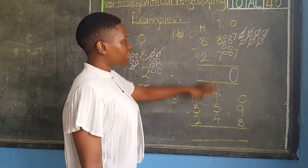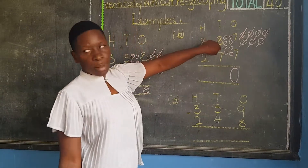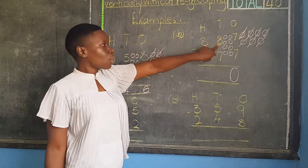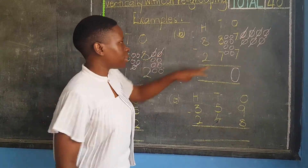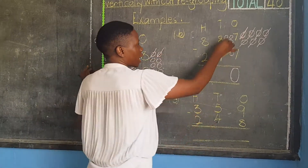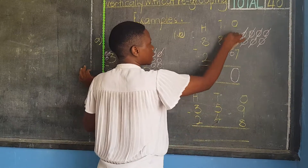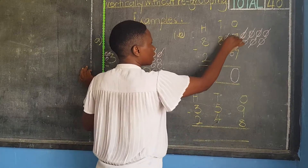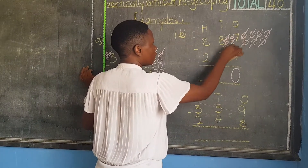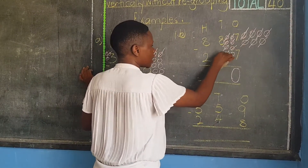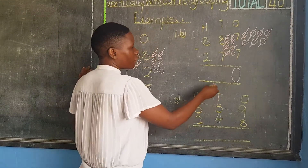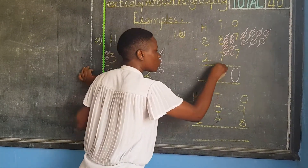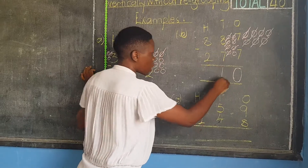Out of these eight balls, I am going to cancel seven. So I count one through seven. I have remained with only one ball.